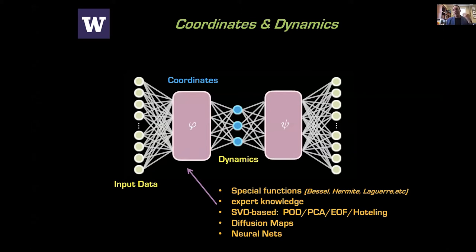The SVD is a linear reduction, and more recently we've moved towards nonlinear reductions, which buys us a lot more flexibility. Two examples are diffusion maps — a way to embed data in a nonlinear coordinate system — and neural networks, which is one of the things we'll look at here.